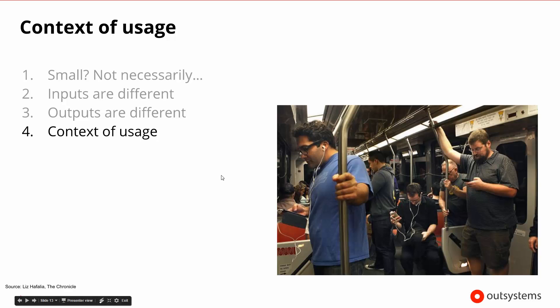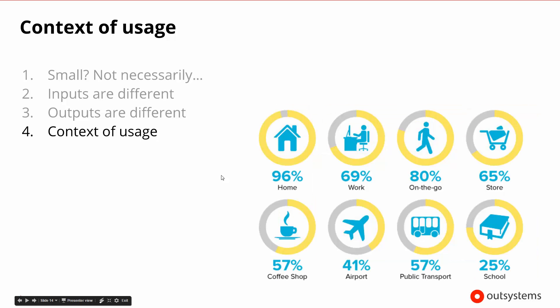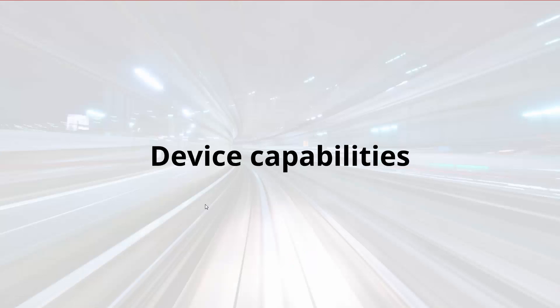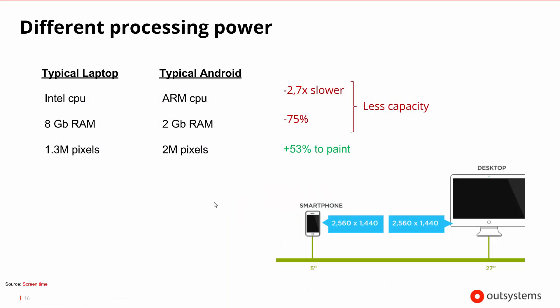We're going to be using these devices in different types of areas. Some people use them at home, but most of the time it's at work, on the go — whether at the airport, the store, or at school. People are constantly using their phones. So if they're constantly using their phones, what are the capabilities of these devices that we should be thinking of?